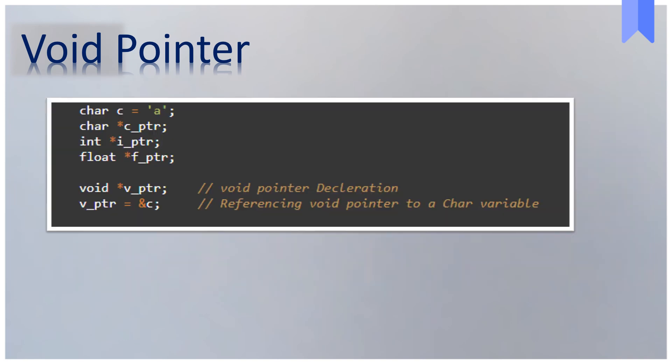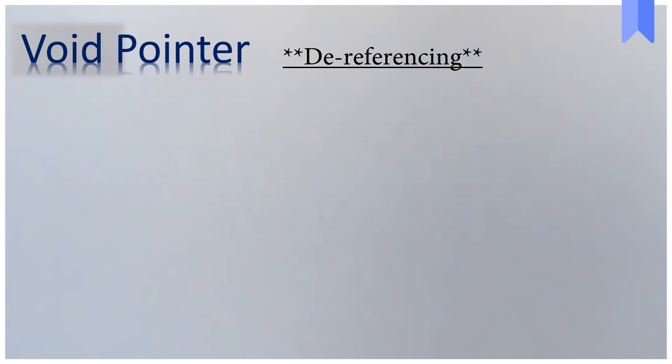Declaring and referencing a void pointer is the same as for any other pointer variable. For example, here I have declared a void pointer VPTR and referenced it to a character variable. However, a void pointer doesn't know which type of object it is pointing to, so it cannot be directly dereferenced.